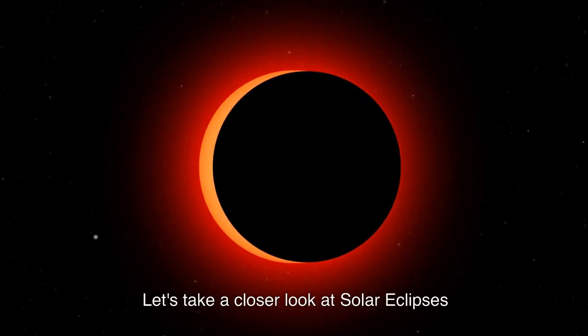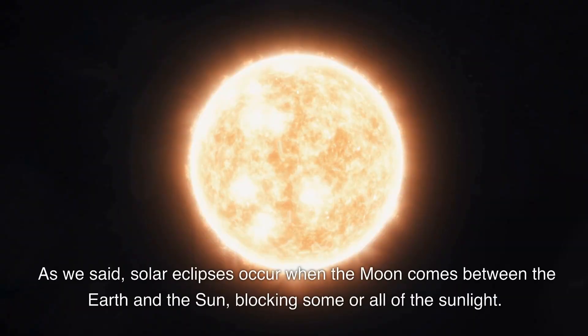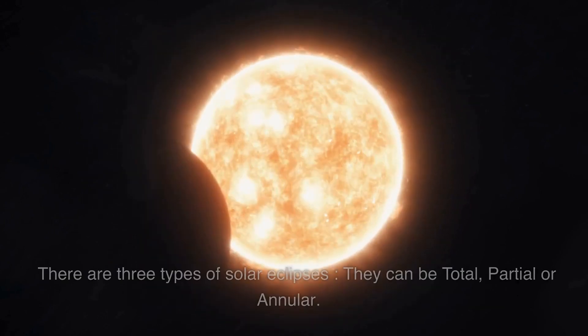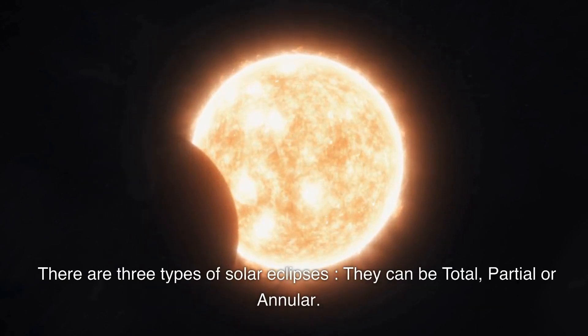Let's take a closer look at solar eclipses. As we said, solar eclipses occur when the moon comes between the earth and the sun, blocking some or all of the sunlight. There are three types of solar eclipses. They can be total, partial or annular.